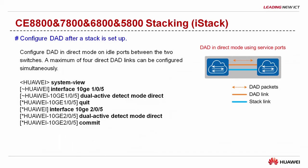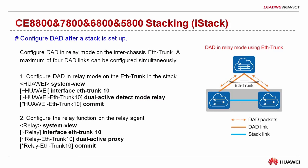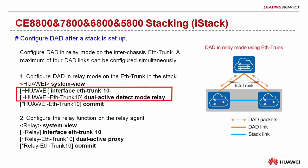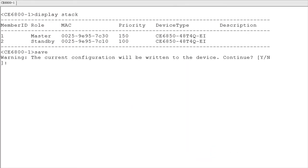After confirming that the stack has been set up, configure the DAD function to detect the stack split. Two DAD modes are commonly used: DAD in direct mode and DAD in relay mode. In direct mode, DAD is performed using the dedicated link between the two switches. When configuring the direct mode, connect the two switches and enable DAD on their connected interfaces. In relay mode, DAD is performed using the inter-device aggregation link between the stack and upstream and downstream devices. When configuring the relay mode, enable DAD on the link aggregation interfaces of the stack and enable the relay function on the link aggregation interfaces of the relay agent. Note that the direct mode and relay mode cannot be configured simultaneously in the same stack. After completing the preceding configurations, run the save command immediately to save the stack configuration.